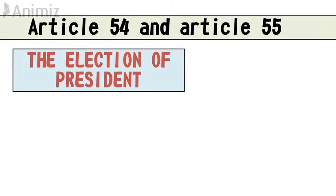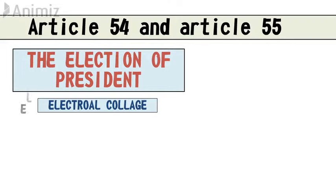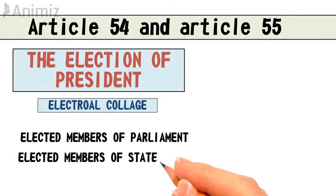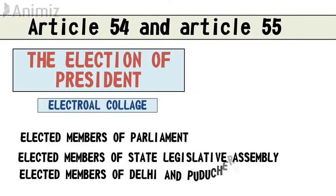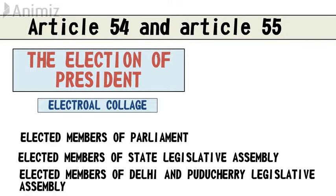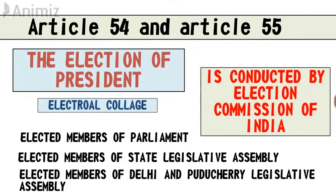Article 54 and Article 55 talk about the election of the President — that is, how the President is elected. The President is elected by an Electoral College, which consists of elected members of Parliament, elected members of State Legislative Assemblies, and elected members of Delhi and Pondicherry Legislative Assemblies. The election is an indirect election conducted on a secret ballot by means of the Single Transferable Vote system, and is conducted by the Election Commission of India.